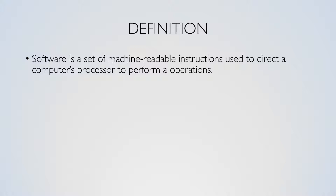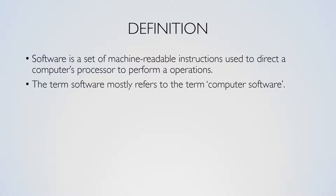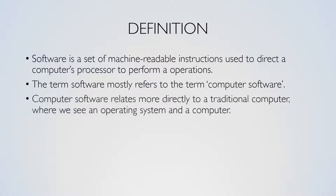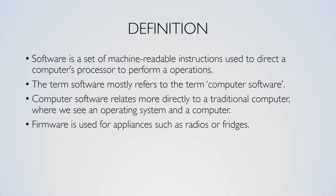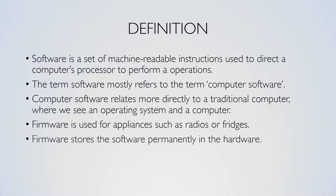The term software mostly refers to computer software. However, the term software also covers other areas. Firmware is often used for appliances such as radios, where the software is permanently stored in the hardware. This combines the qualities of both software and hardware, as in this case both the hardware and software cannot be modified without physically modifying components.